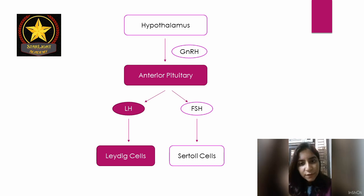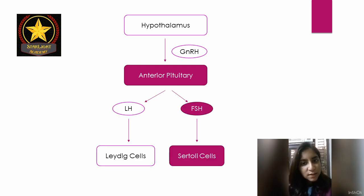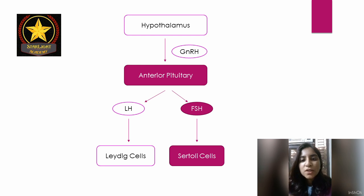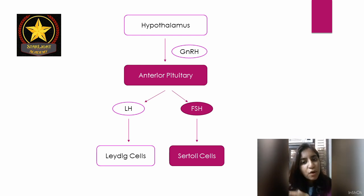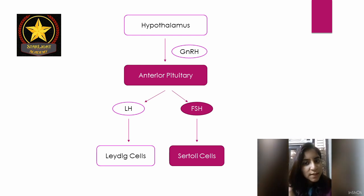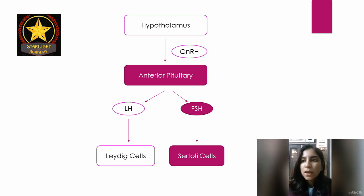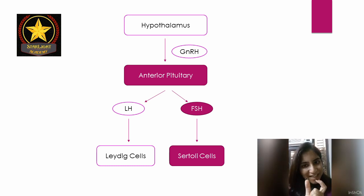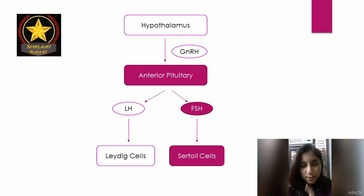The second gonadotrophin is FSH — follicle stimulating hormone. FSH goes and binds to Sertoli cells, also known as nurse cells, which are present in the seminiferous tubules of the testes. An easy way to remember this is FSH has an S in it — S for Sertoli cells.